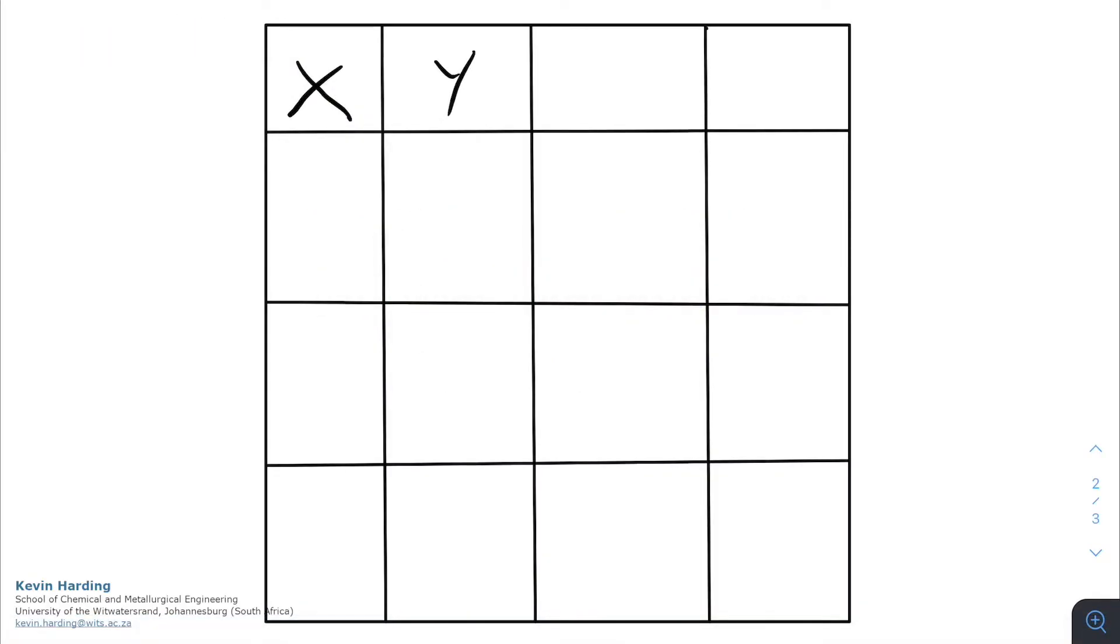In previous videos we looked at linear interpolation and extrapolation with graphical data, but now let's look at it in tabular form. We have values for x and y: x of 30 with y of 100, and x of 50 with y of 175. The question is: what is the value of y if we have a value of x of 45?